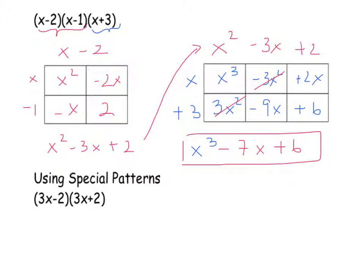In the next problem we need to use the special patterns. We can see that this is the difference of two terms and the sum of the exact same two terms, which if I apply my special pattern gives me the difference of squares. So the answer is 9x squared minus 4.